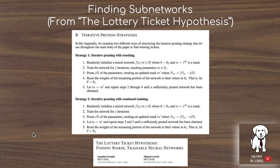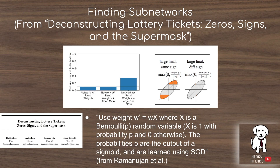One core idea of this paper is how they find subnetworks within dense architectures. In the Lottery Ticket Hypothesis, they prune the network after training, reset to initial weights using the new mask, retrain, and repeat until reaching desired sparsity. In the 'Deconstructing Lottery Tickets' supermask paper, they use a random variable set as one or zero to mask or not mask each weight, with learned probabilities output from a sigmoid trained via stochastic gradient descent — introducing stochasticity in how the mask is applied.